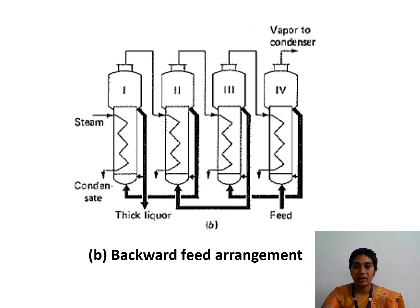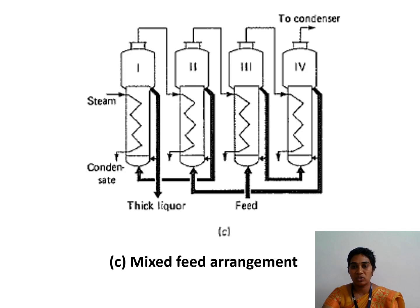Next is the backward feed arrangement. Here the steam proceeds in the same manner as before — from first to second, second to third, and third to fourth. However, the feed enters at the back, at the fourth evaporator, and moves to the third, then the second, then the first evaporator. The final concentrated product is collected at the first evaporator.